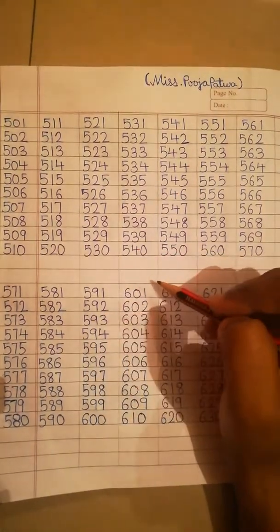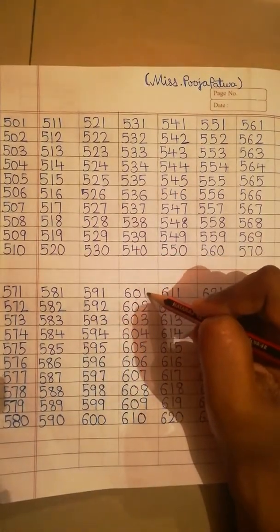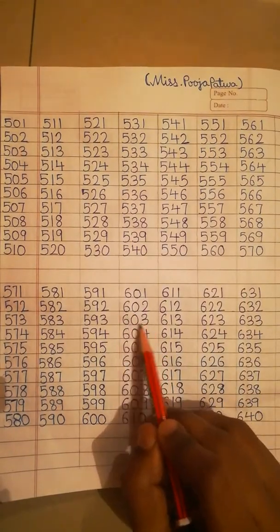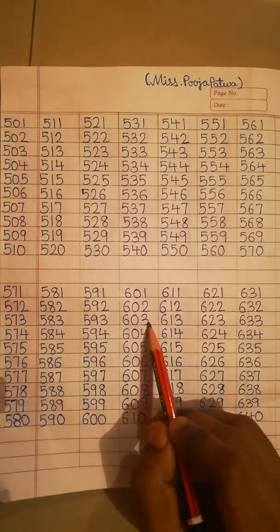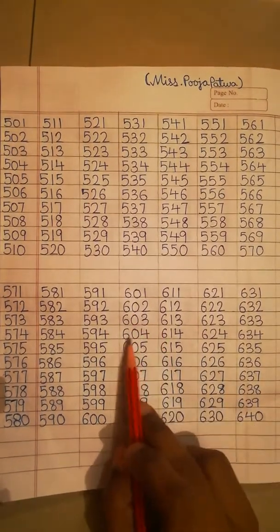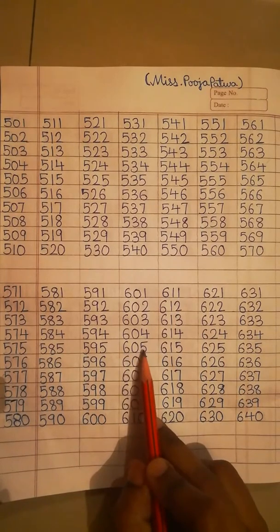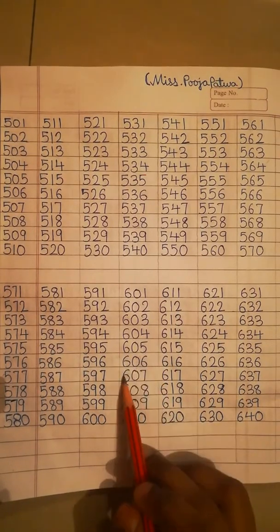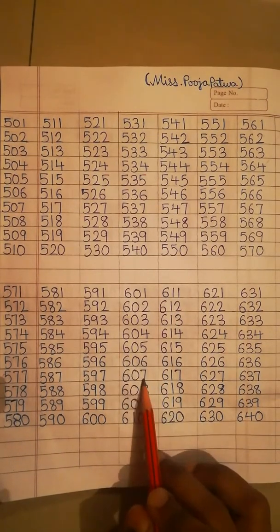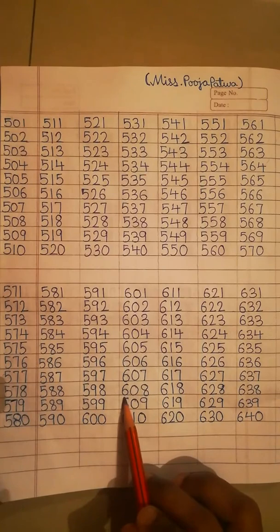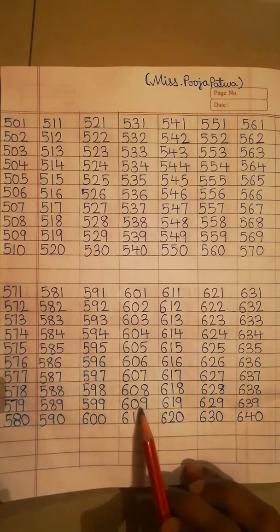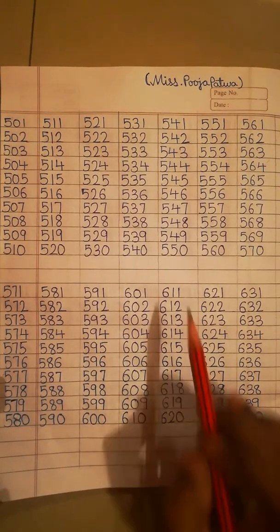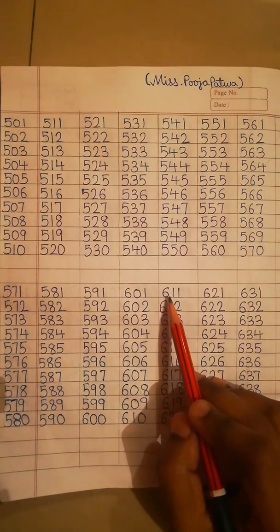Next line we write: 601, 602, 603, 604, 605, 606, 607, 608, 609, 610. Next line.